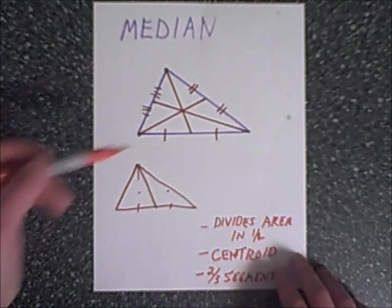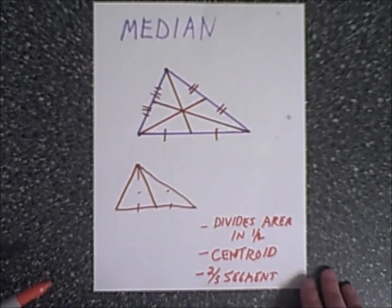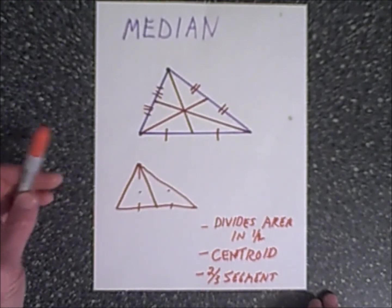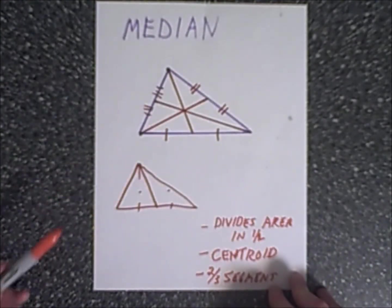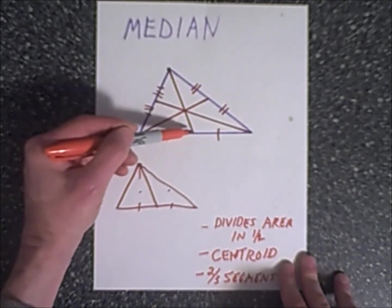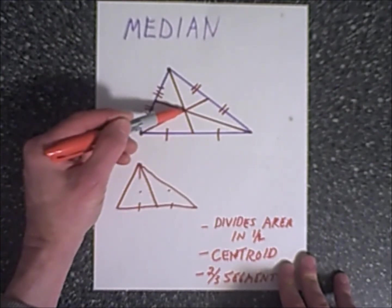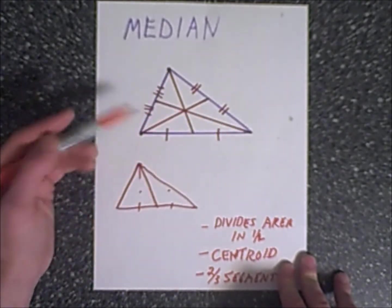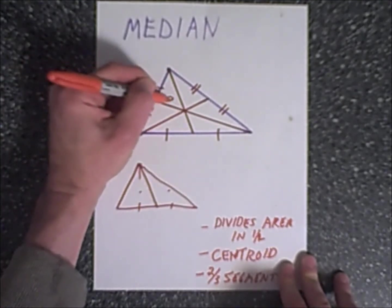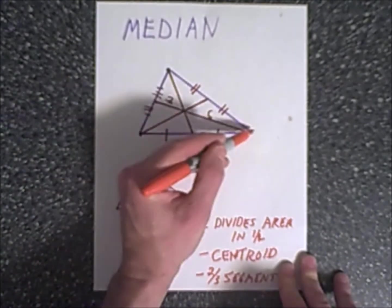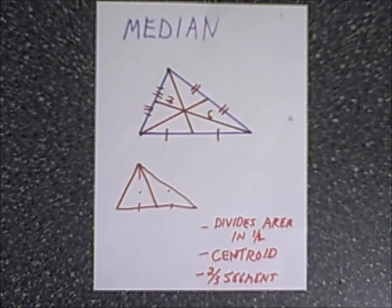Another cool thing about the median is the point of concurrency is called the centroid. If this shape were made of concrete, you could balance it on the centroid because the three parts are congruent in area. Also, the measurement from a side to the centroid is one-third of the way to the vertex. So if one segment were three, the other would be six — and notice this is double that.